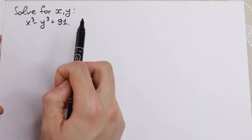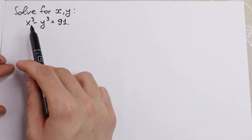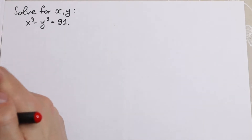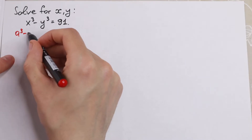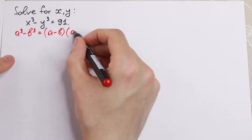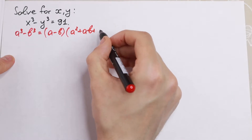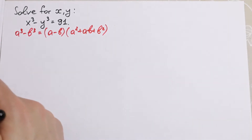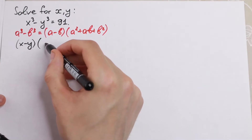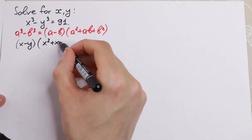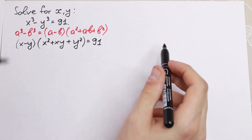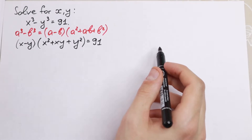The first method to solve this is to write the difference of cubes as a product of two parentheses, using the formula: a cubed minus b cubed equals (a minus b)(a squared plus ab plus b squared). Applying this, we get (x minus y)(x squared plus xy plus y squared) equals 91.